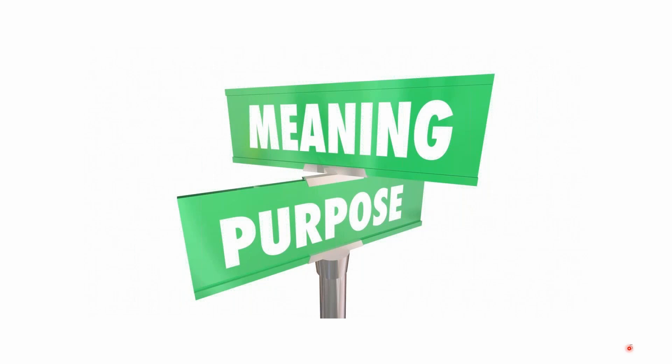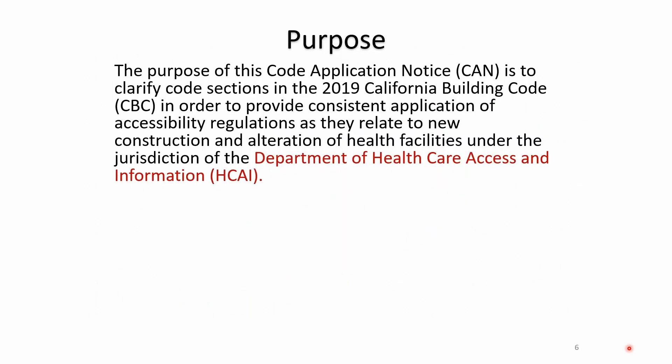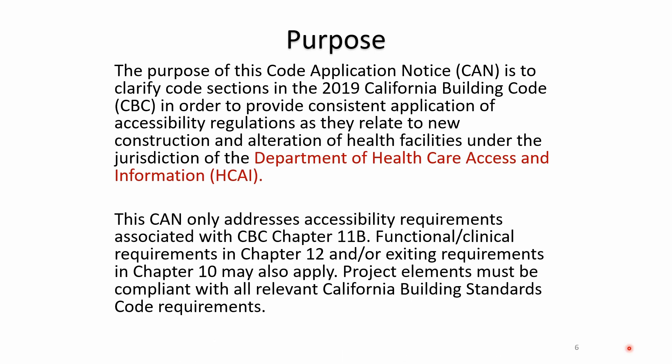First, we're going to look at the meaning and purpose of CAN 2-11B. The purpose of this CAN is to clarify sections in the 2019 California Building Code in order to provide consistent application of accessibility regulations as they relate to new construction and alteration of healthcare facilities under the jurisdiction of HCAI. This CAN only addresses accessibility requirements associated with CBC Chapter 11B.